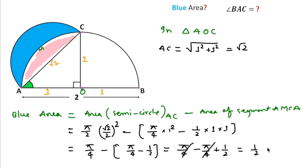The area for this blue region is 1/2. Now we have to find angle BAC. As we can see, OC is perpendicular on diameter AB. This means C will be the middle point of this arc ACB.